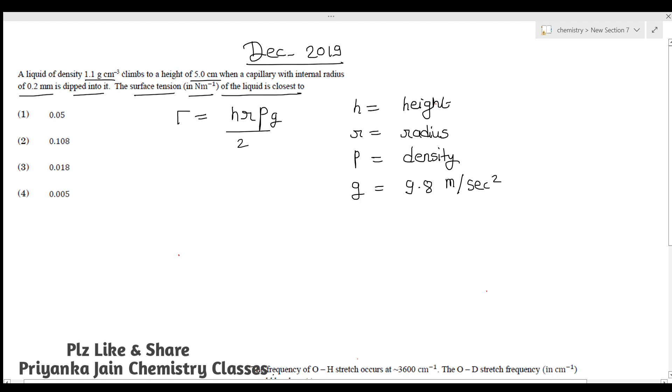First thing you should remember: all the units should be in the same system. Height is given as 5 cm, so this will be equal to 5 × 10⁻² m. Radius r is given as 0.2 mm, so it will be equal to 0.2 × 10⁻³ m.